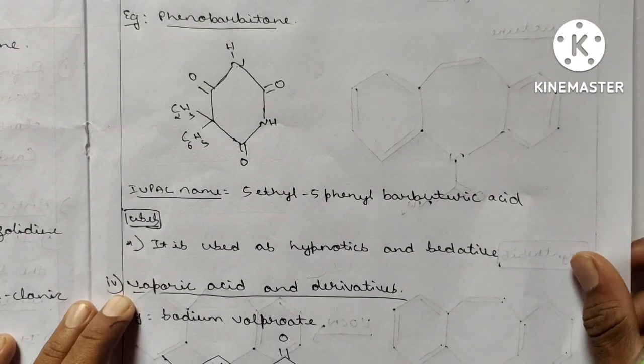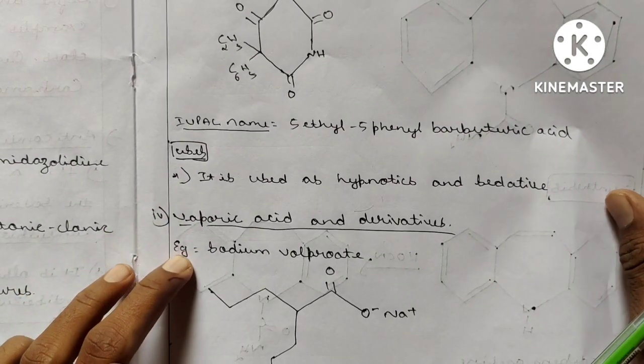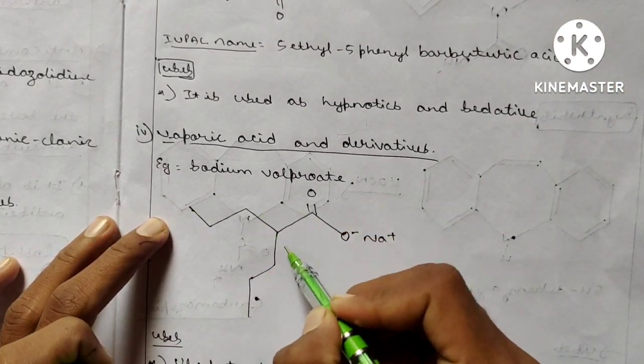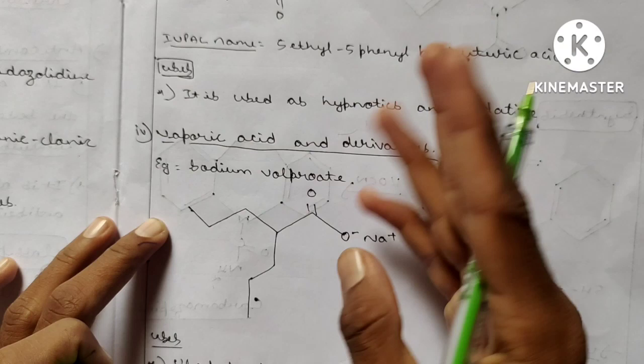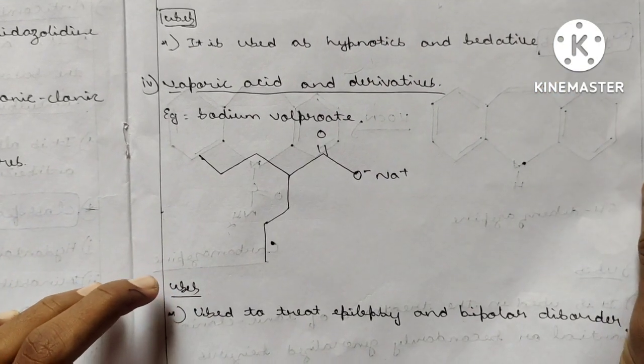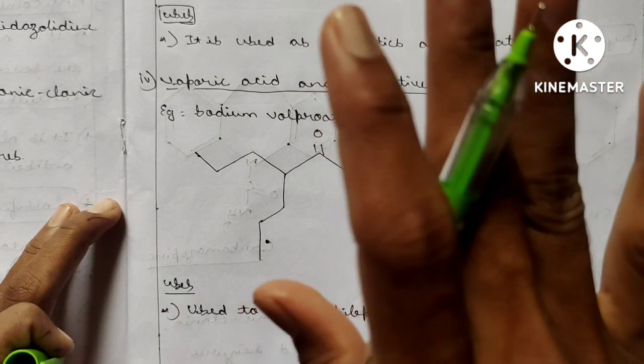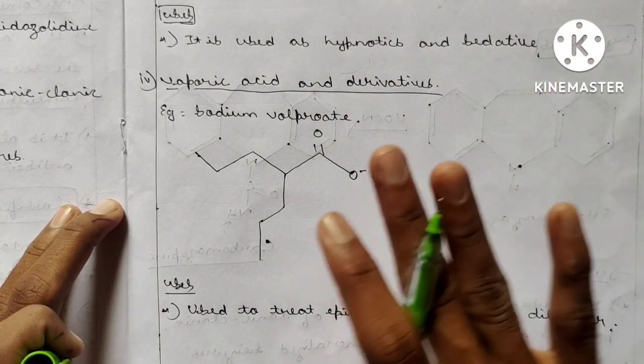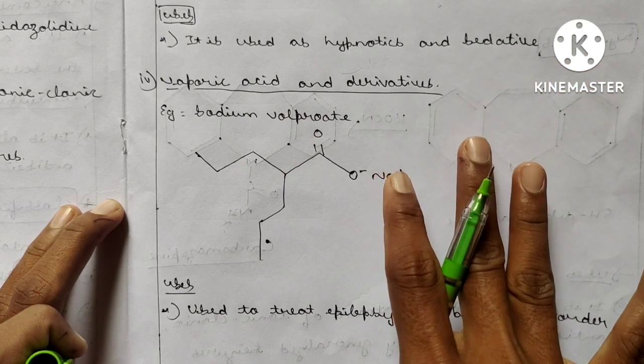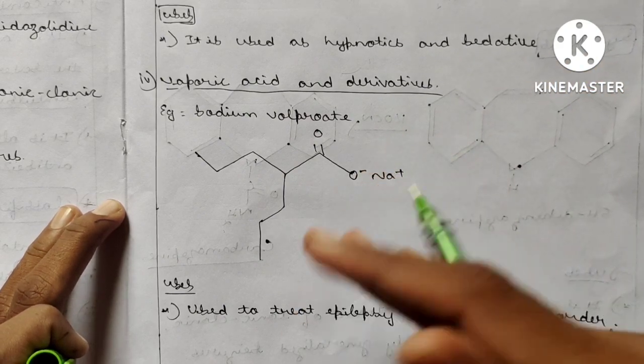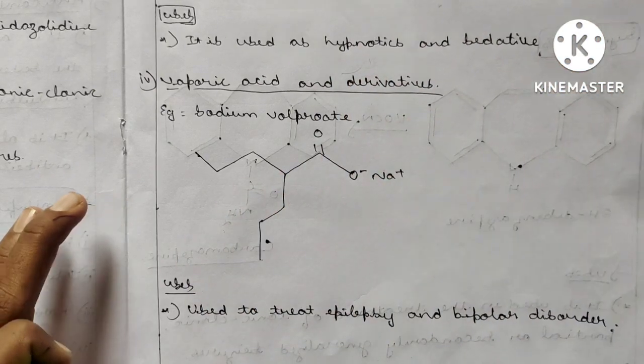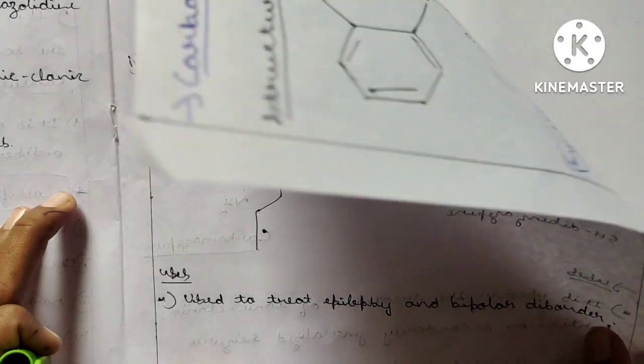Valproic acid and derivative: sodium valproate. This is the structure of sodium valproate. Just go through the structure. If you practice once or twice, you will clear these structures. Please practice these structures. What questions I am discussing, you discuss only those questions for today itself, definitely you will pass your subject. It is used to treat epilepsy and bipolar disorder.